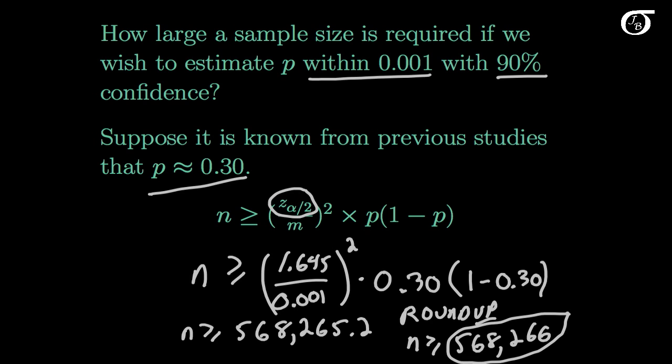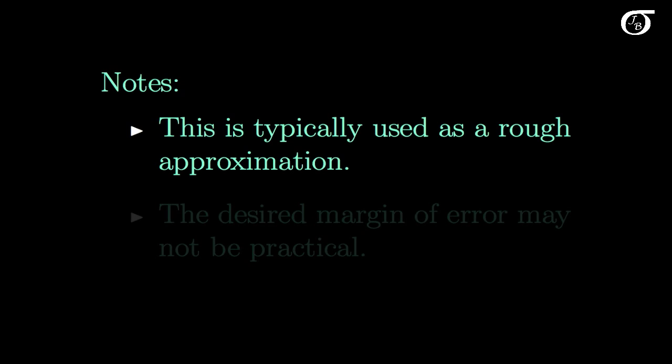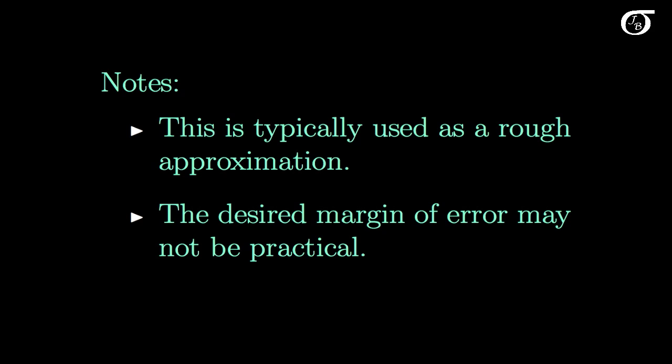Which leads us to the idea. These calculations are typically used as a rough approximation. When we get a required sample size of 1068, that doesn't necessarily mean we have to run out and get a sample size of exactly 1068. It means that we need something approximately that size and there may be other considerations taken into effect.